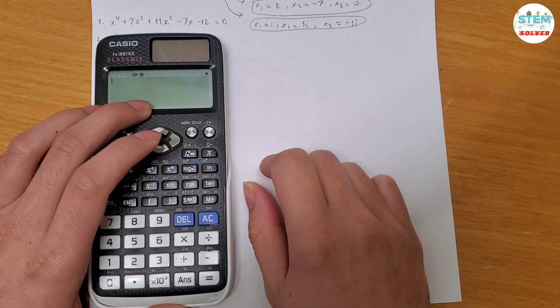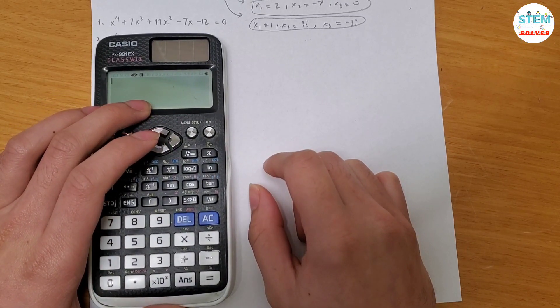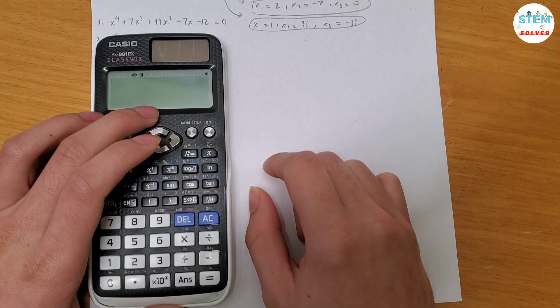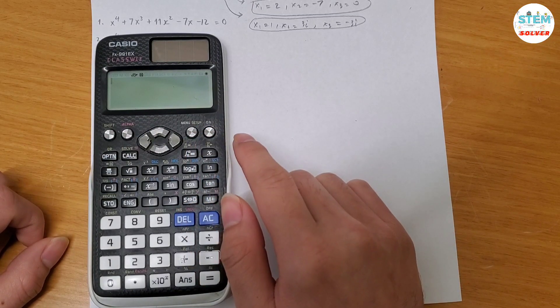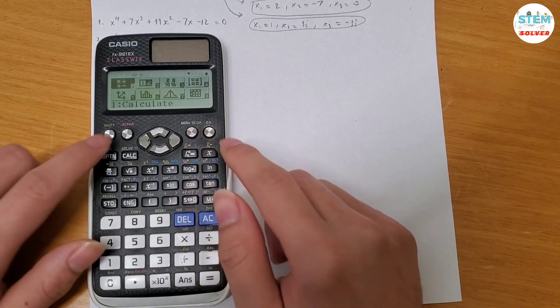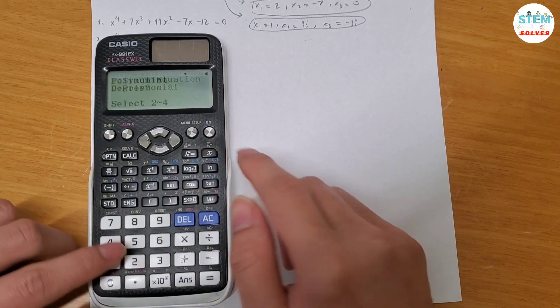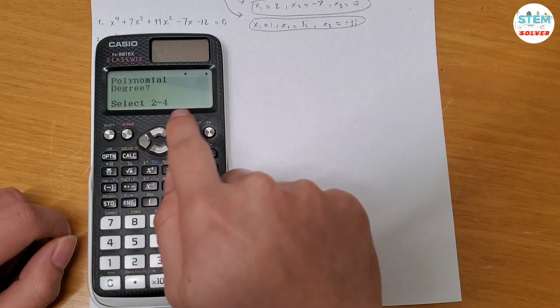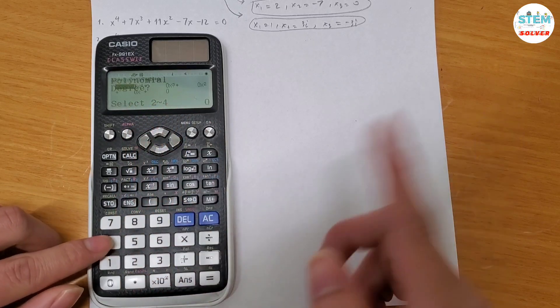So I have this example here: x to the fourth plus 7x cubed plus 11x squared minus 7x minus 12 equals 0. On your calculator or this type of calculator you hit setup alpha a 2 and then set polynomial degree. So select 4.